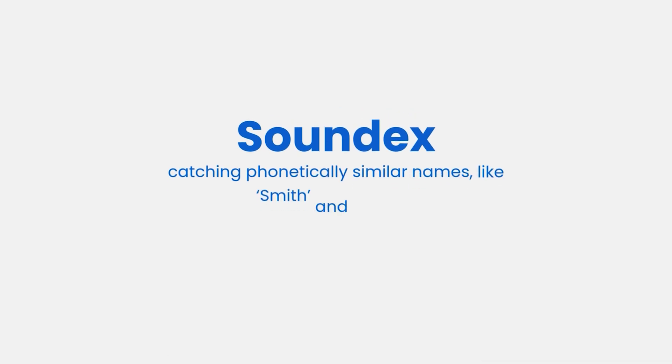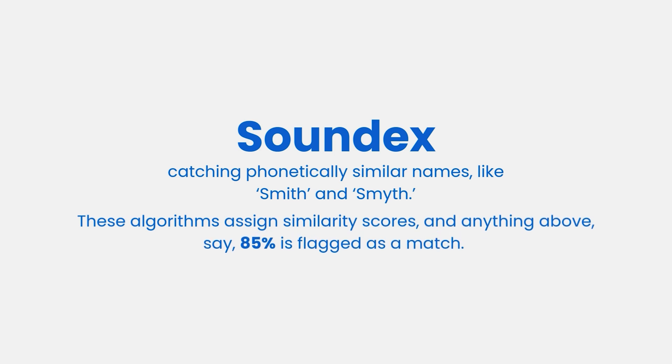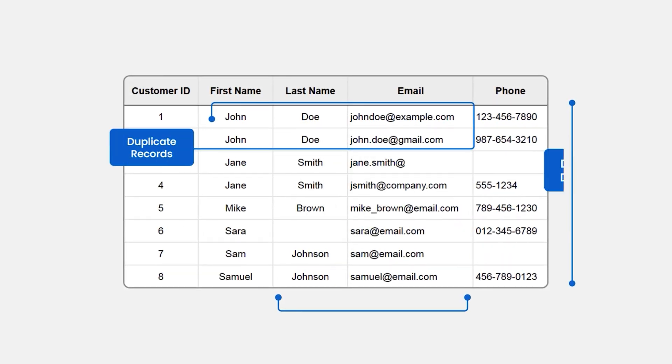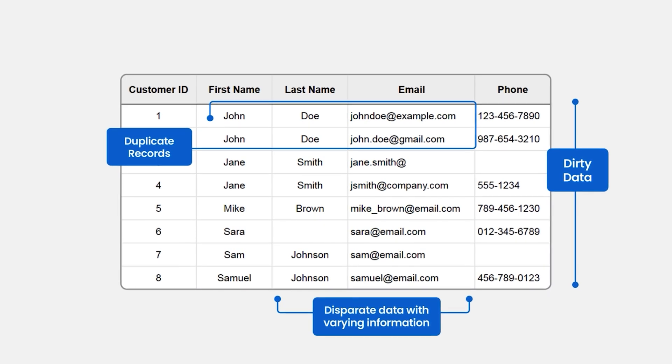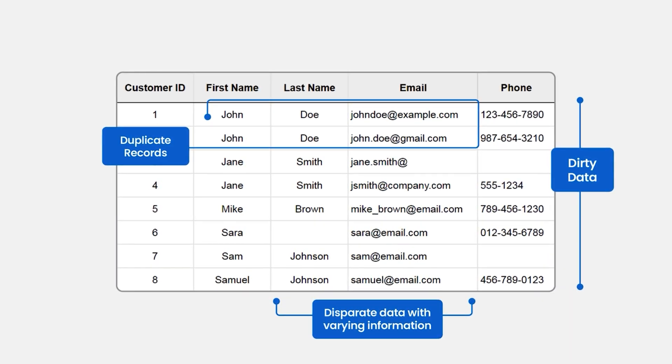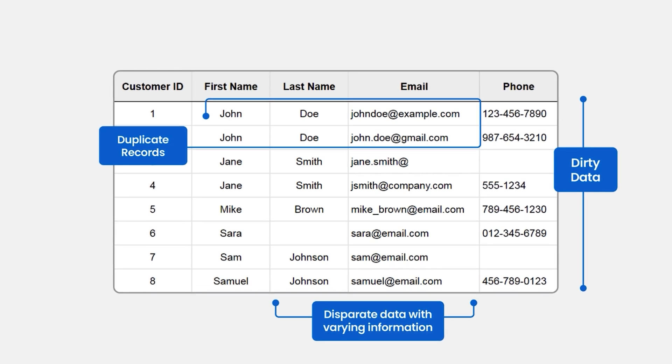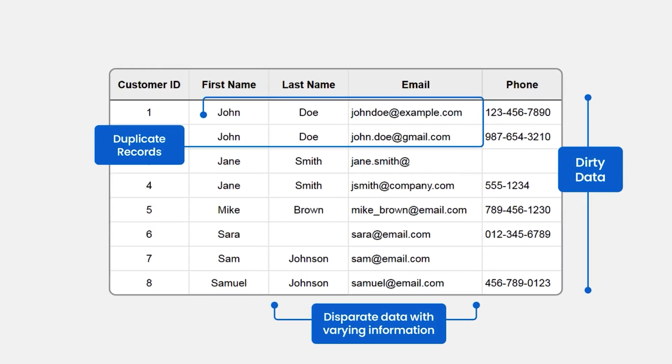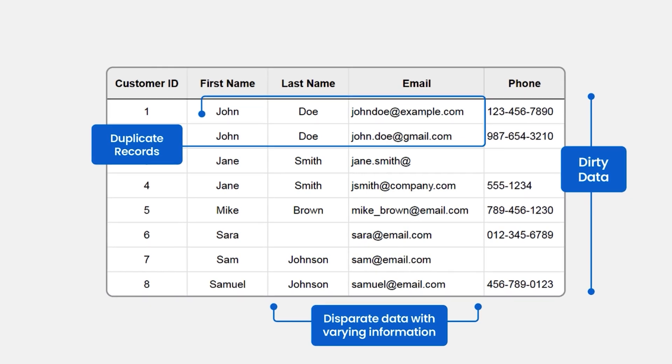Jaro-Winkler is another popular method used to compare two pieces of text, like names or addresses, to figure out how similar they are, even with small mistakes like typos or swapped letters. My personal favorite, Soundex, is perfect for catching phonetically similar names. All of these algorithms assign similarity scores, and anything above 85% is flagged as a match. These algorithms are designed not just to find duplicate customer records, but also to help clean messy data where small errors can derail the accuracy and integrity of a dataset.